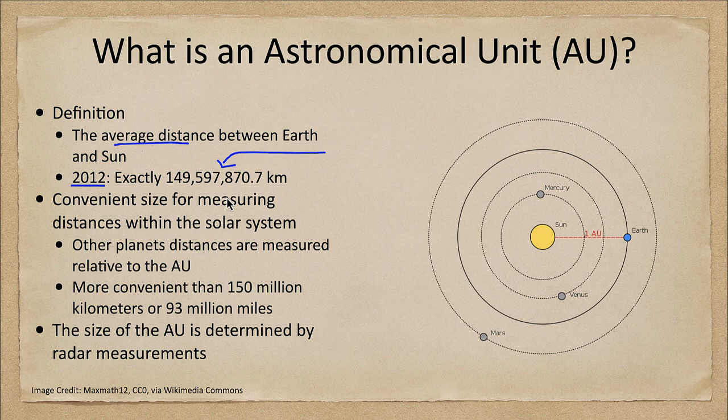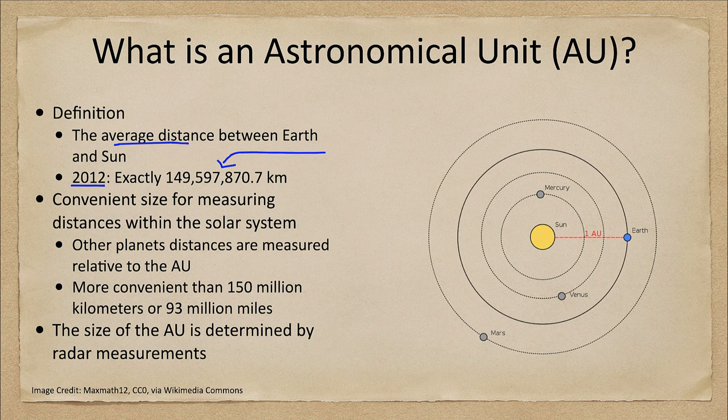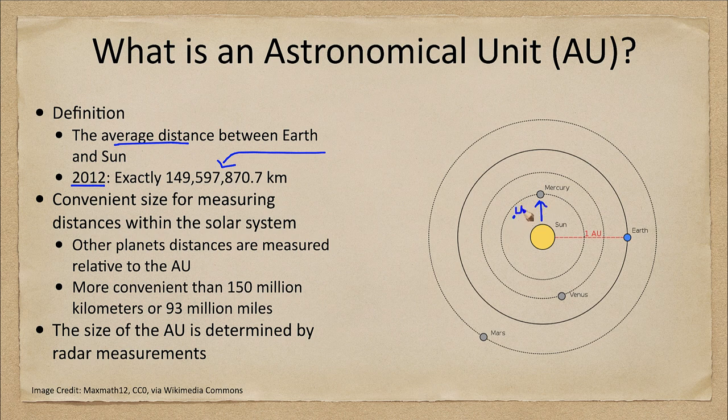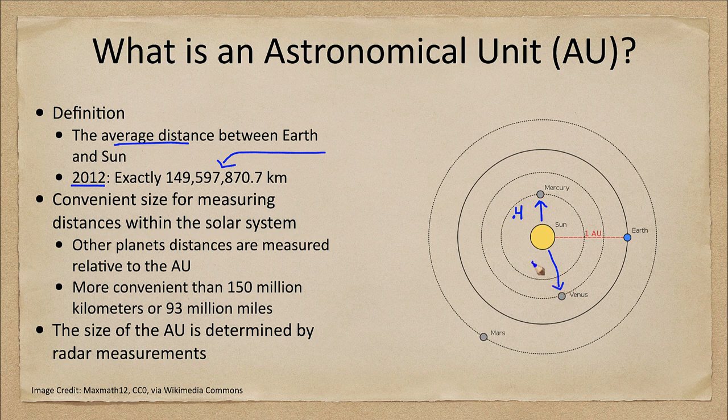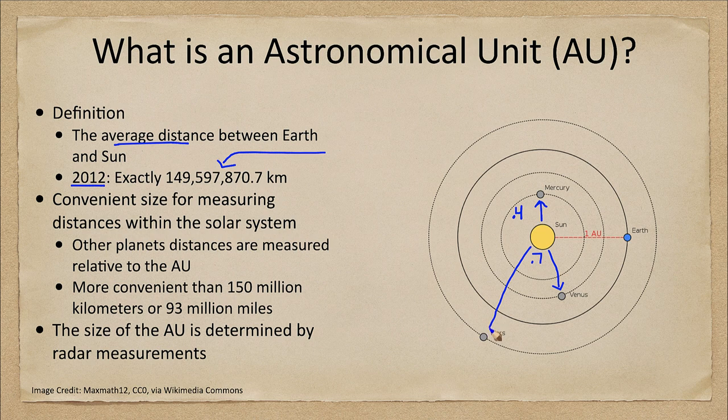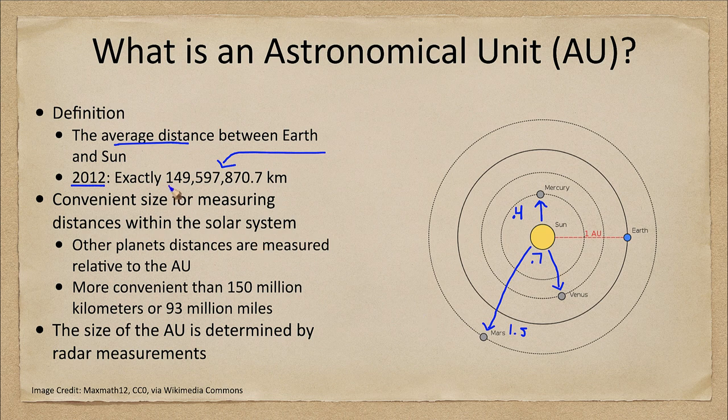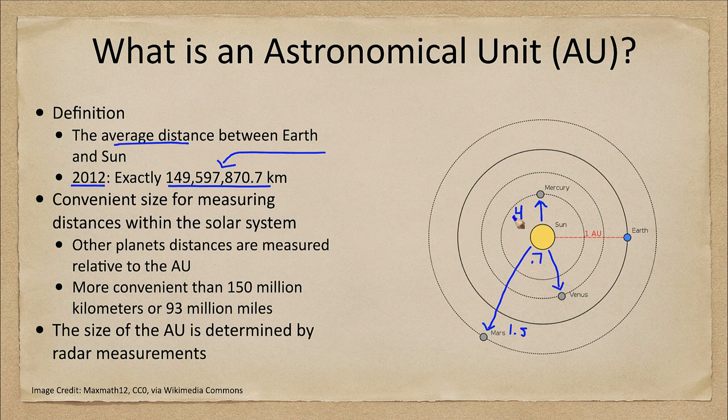Now what we see here and why do we use an astronomical unit? Well it's a convenient size for measuring distances within the solar system. Mercury here is about 0.4 astronomical units away, Venus about 0.7, Mars about 1.5. So we have all of those are very easy numbers to follow. That's a lot easier than dealing with big numbers in the hundreds of millions. We can easily compare these numbers that we would not be able to do elsewhere.